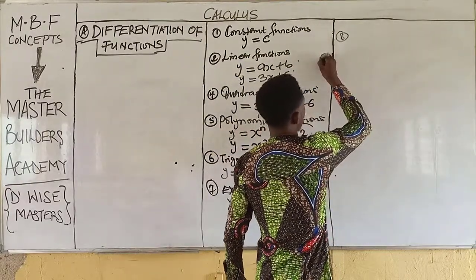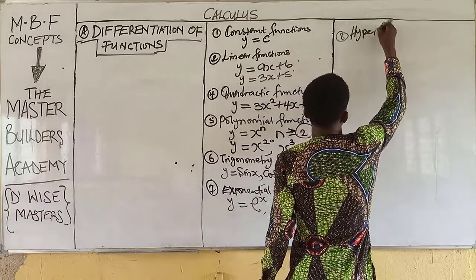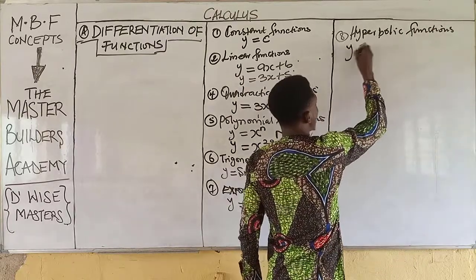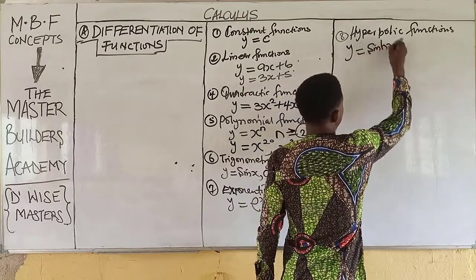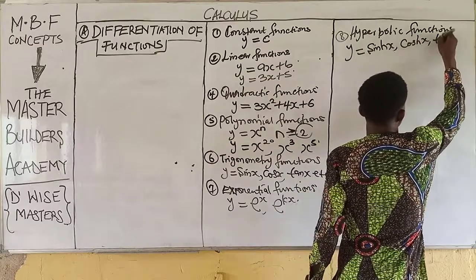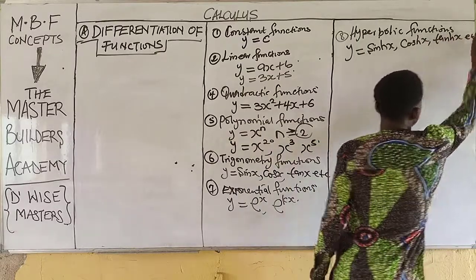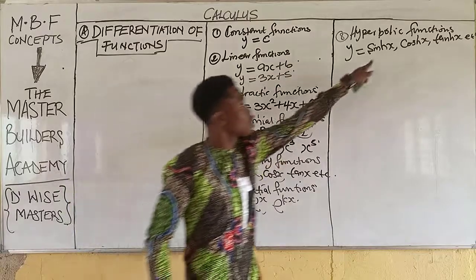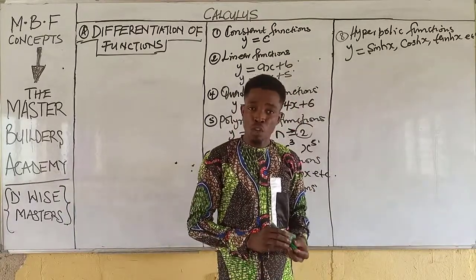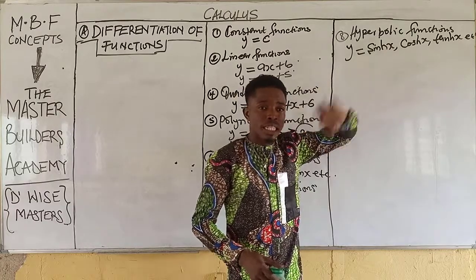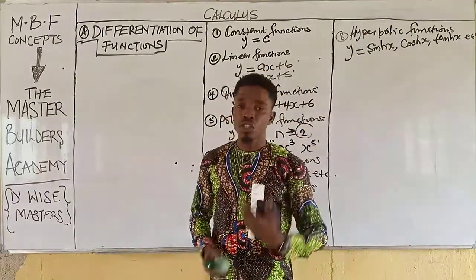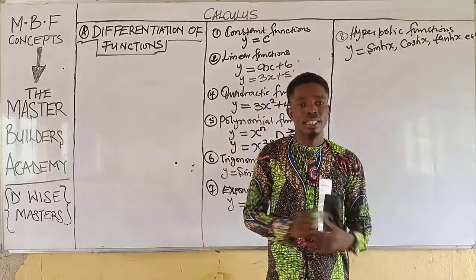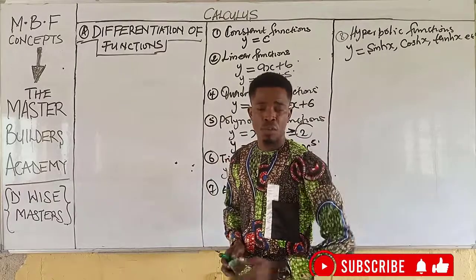Then we have hyperbolic functions. For hyperbolic functions, this is where you have y = sinh x, cosh x, etc. The difference between hyperbolic functions and trigonometric functions is that you have 'h' after the trig function name. It is not a coefficient of x — anytime you have sinh x or cosh x, these are examples of hyperbolic functions.